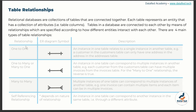The first type of relationship I would like to explain is the one-to-one relationship, and the entity relationship diagram is displayed on my screen. Whenever you see a straight line with tiny vertical lines at both edges, that represents a one-to-one relationship.